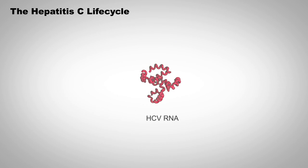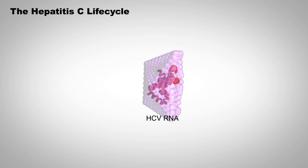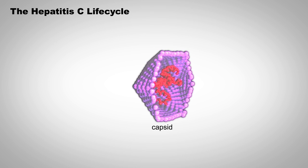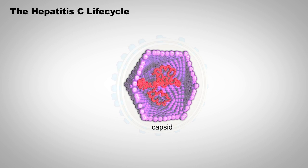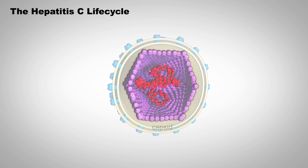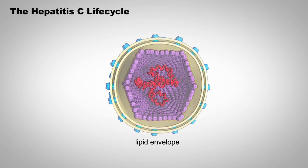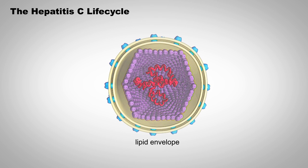The HCV RNA is surrounded by an icosahedral shell of protein, which is then surrounded by a lipid envelope made from modified host cell membrane.